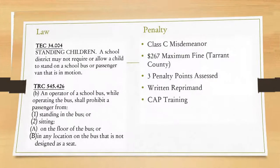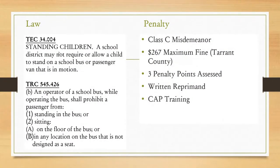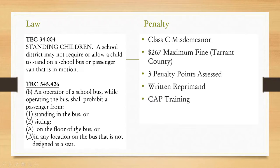This is a clear violation of two laws. The Texas Education Code says a school district may not require or allow a child to stand on a school bus or passenger van that is in motion. The Texas Transportation Code goes into more detail: an operator of a school bus shall prohibit a passenger from standing in the bus, sitting on the floor, or in any location that is not a designed seat. So they cannot sit anywhere on the floor or in the aisle — we have to keep people seated on that bus as best as possible.